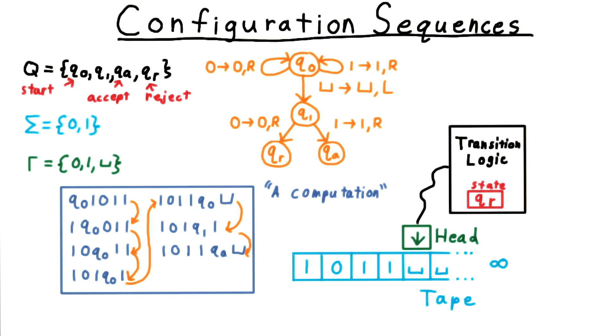At a slightly higher level, a whole sequence of configurations like this captures everything that a Turing machine did on a particular input. And so, we will sometimes call such a sequence a computation. And actually, this representation of a computation will be central as we discuss the Cook-Levin theorem in the section on complexity.